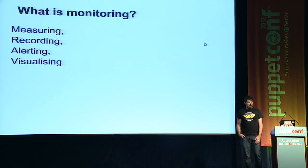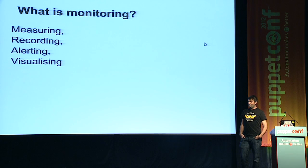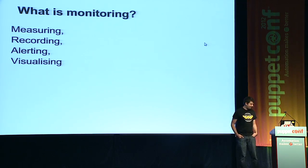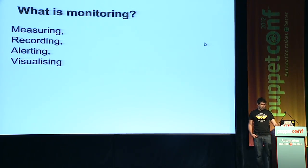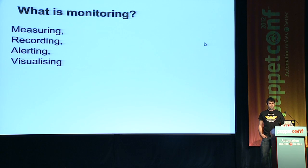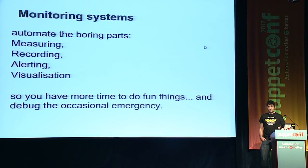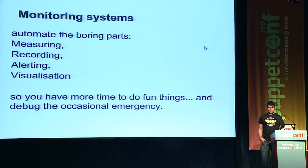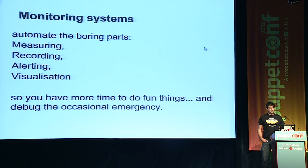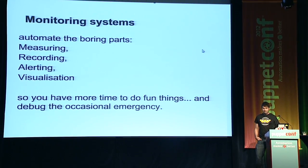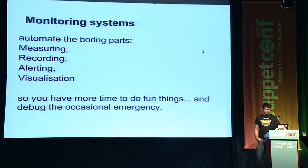So what is monitoring? I'm sure you're all well-versed in what's actually going on, but right now I think there are four main components. There is obviously measuring it, recording the results of those measurements, alerting based on the measurements, and visualizing what's being recorded. Now monitoring systems obviously automate a lot of those boring parts, so we can get on and do useful stuff. Otherwise, it would be a terrible job if you had to go and measure everything manually and decide whether there was something to take action on.